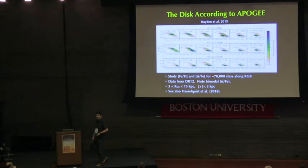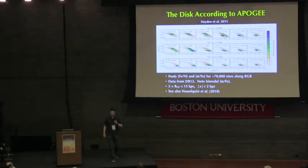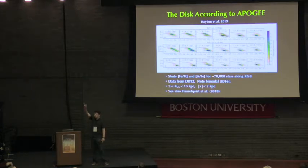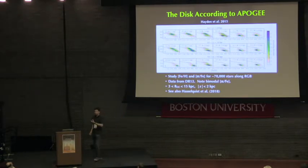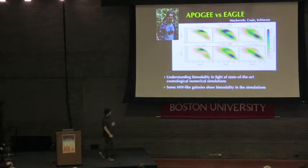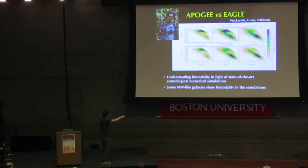When you look at the APOGEE data, the situation becomes very complicated. If you had to tune models to explain the solar neighborhood, now you have to tune them for all these radial and vertical bins. This is alpha over iron against iron for radial bins and distance from the galactic plane. I challenge you to find two bins where the distributions are the same — it just doesn't happen. So we have to do a different approach in order to solve this problem. At LJMU, my student Ted MacReth has been working on this using the EAGLE simulations.